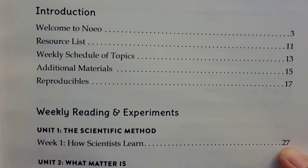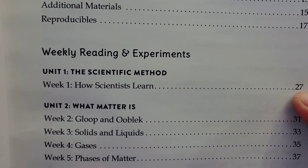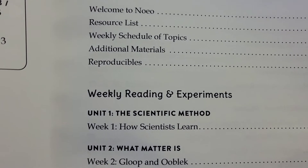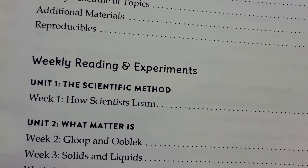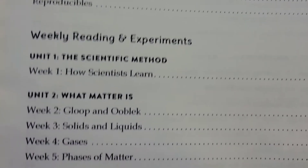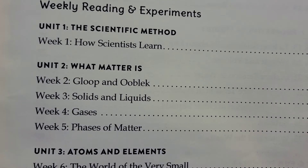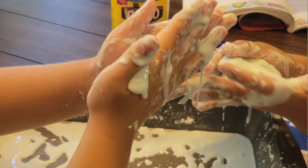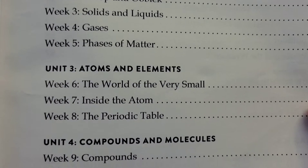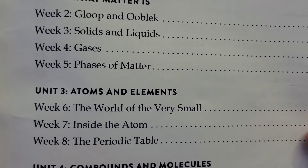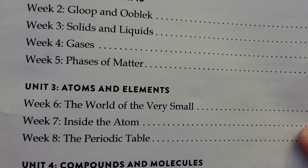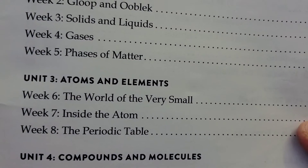This is the table of contents — Introduction, Weekly Reading, and Experiment. As I said, this is divided into 11 units. Unit 1 is the Scientific Method, how scientists learn. Unit 2 is what matter is — we made a U-block experiment, and then Solids and Liquids, Gases, and States of Matter. Unit 3 is about Atoms and Elements, the World of the Very Small, inside the Atom, and the Periodic Table.